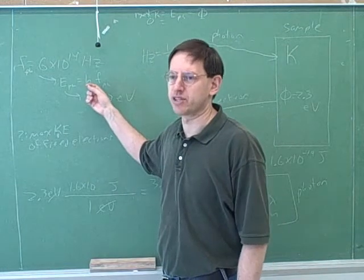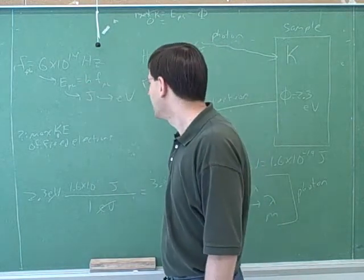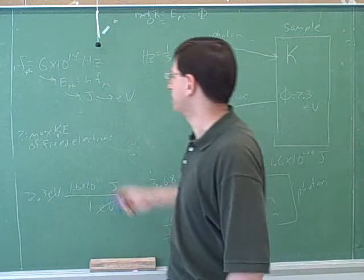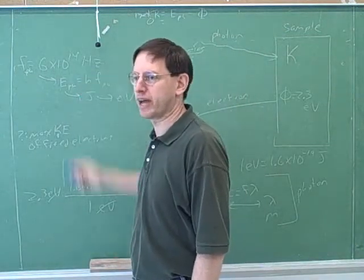So the key problem here again was the unit conversion. So we've got to watch out for the unit conversions here. The work functions are in electron volts, but Planck's constant is in joules. So we have to go back and forth there.